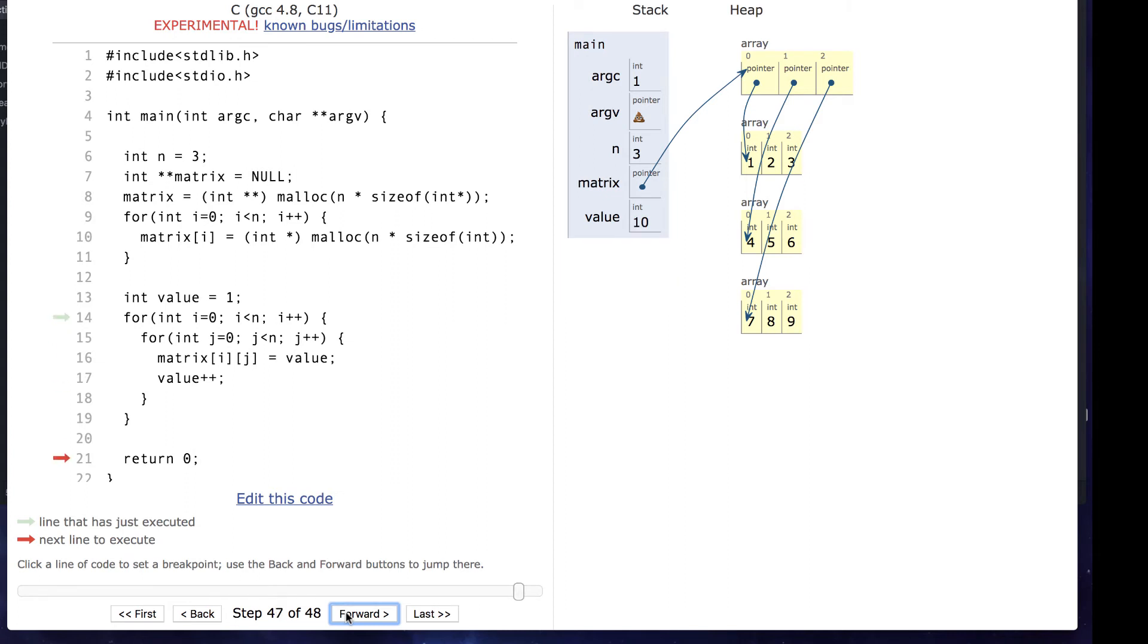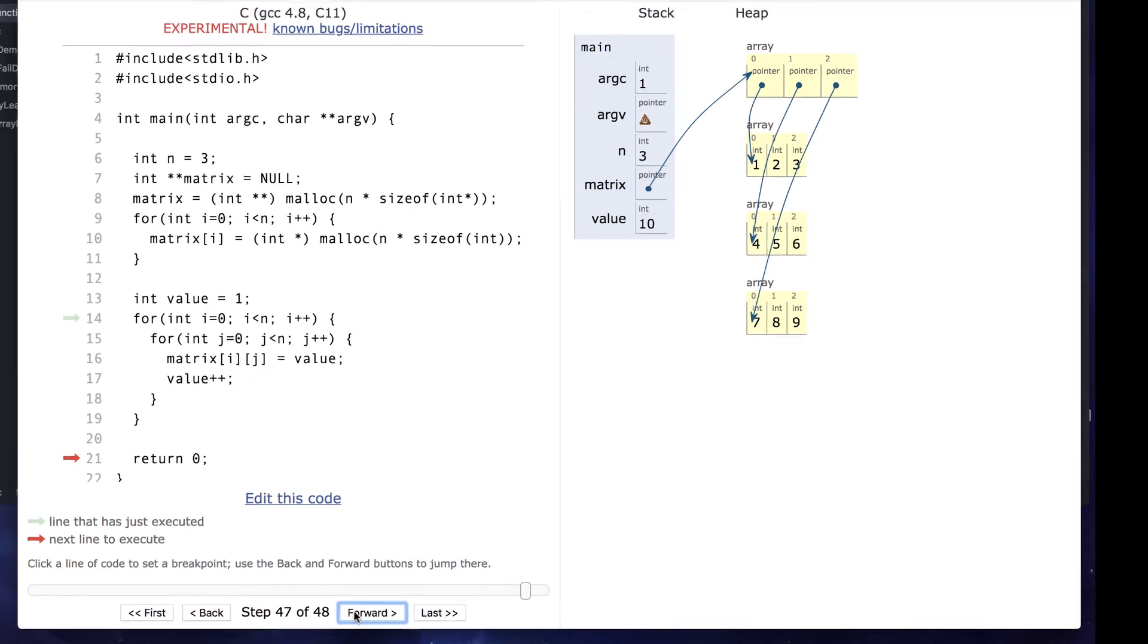Each pointer in the array of pointers is pointing to a completely different memory location. There's no guarantee on how these are actually being allocated. They could be in completely different memory locations. We'll look at an alternative solution later.